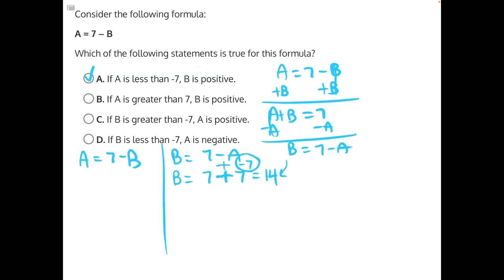Answer choice B says if A is greater than 7, B is positive. Well, let's try B equals 7 minus 7. That would give us 0. If A is greater than 7, if we were to plug in 8 for instance, we would get a negative 1.